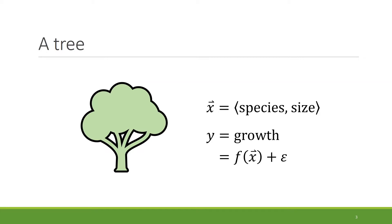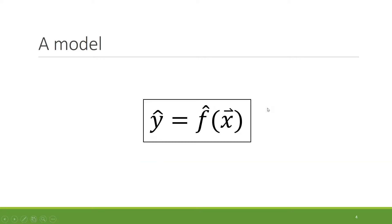There's some random noise epsilon on top, which maybe comes from weather, animals, or whatever. So now we fit a model F-hat, and the goal of this model is that it'll be able to take in tree observations X and output growth predictions Y-hat. In this presentation, we'll be considering supervised learning models in general — think linear regression or neural nets, your favorite supervised learner.